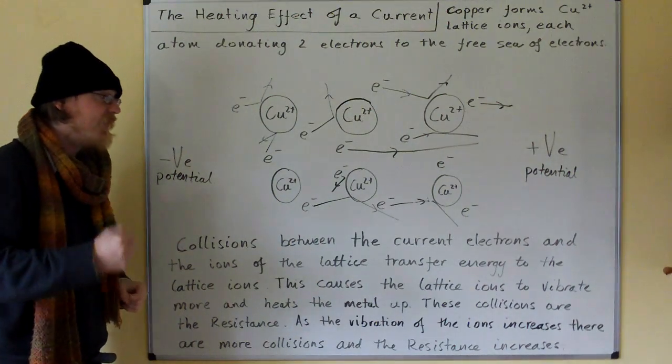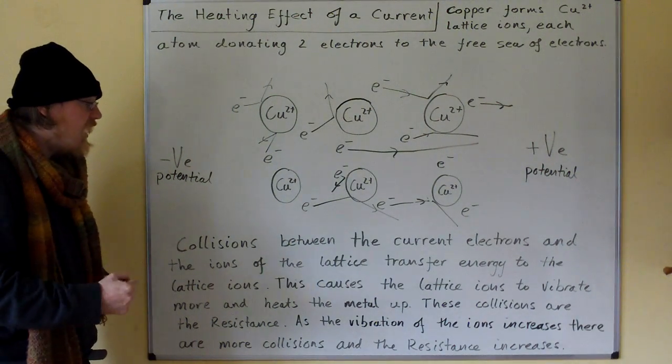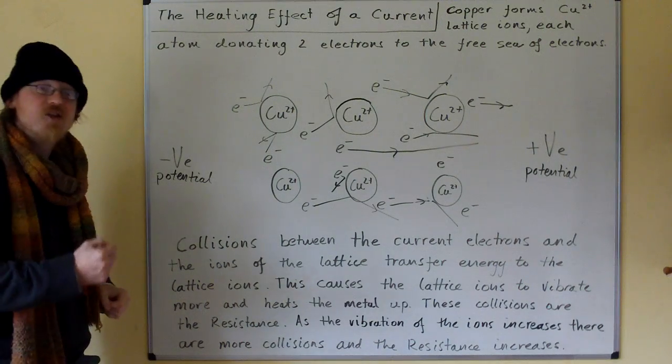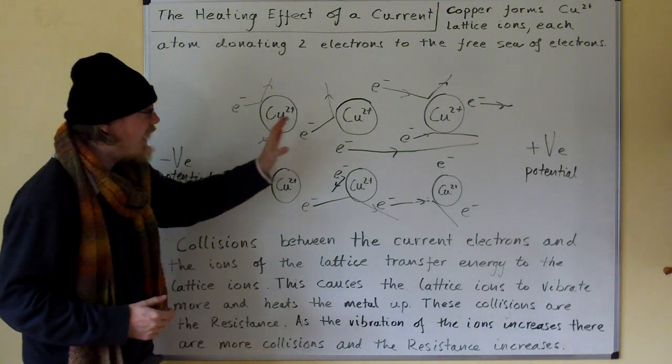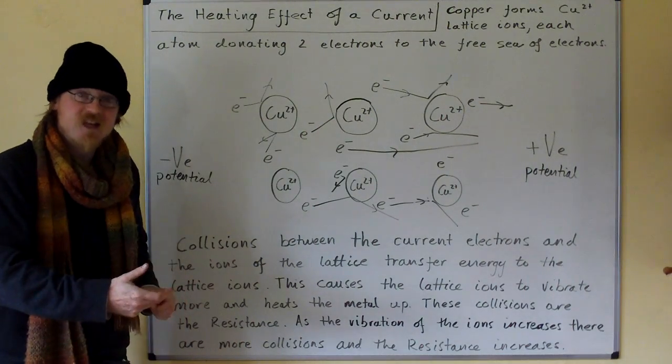Collisions between the current electrons and the ions of the lattice transfer energy to the lattice ions. So this potential pulls the electrons through the material. That's the electric current.